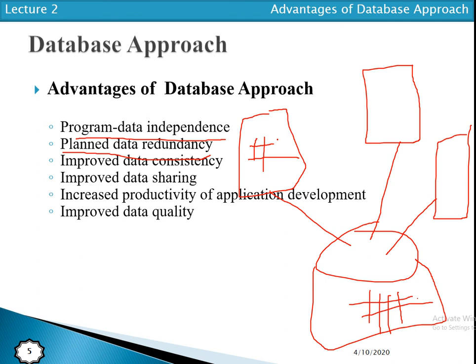The database approach also improves data quality through different types of constraints. Constraints are a set of rules used to maintain the accuracy of the data — rules that no one may be able to violate. For example, in the database approach, a student ID must be unique and cannot be repeated. We have primary key constraints, check constraints, unique constraints, null constraints, and many other constraints which we will discuss later.